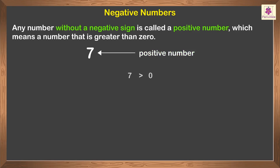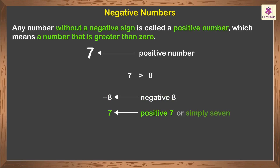Any number without a negative sign is called a positive number, which means a number that is greater than zero. So while negative eight is negative eight, seven is positive seven, or simply seven.